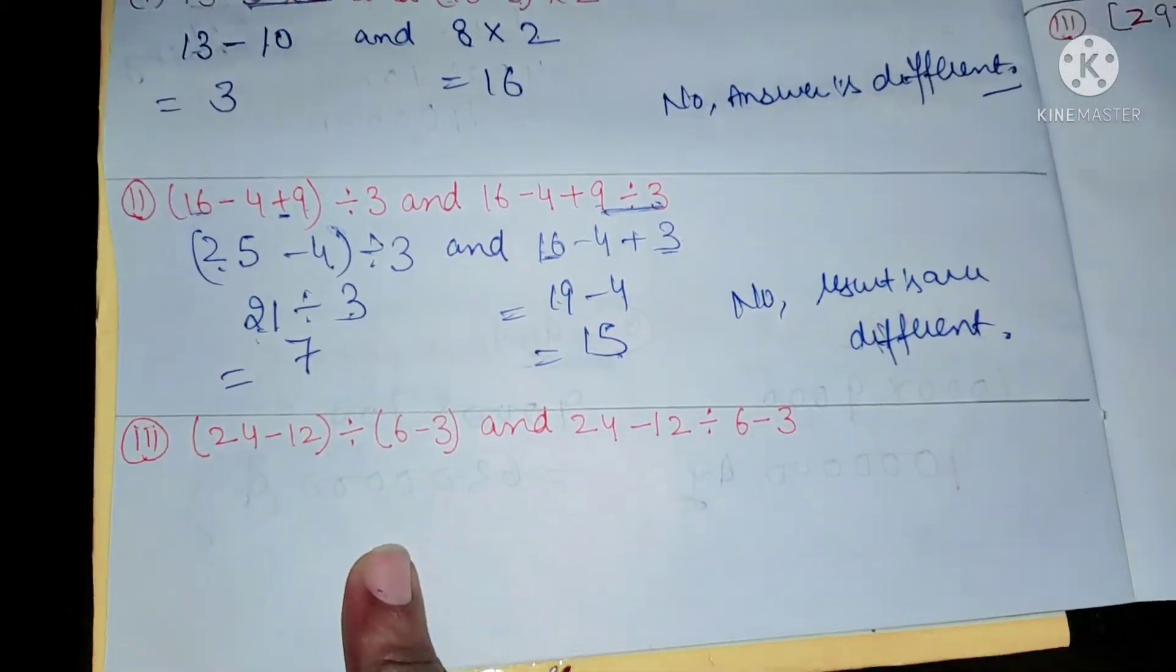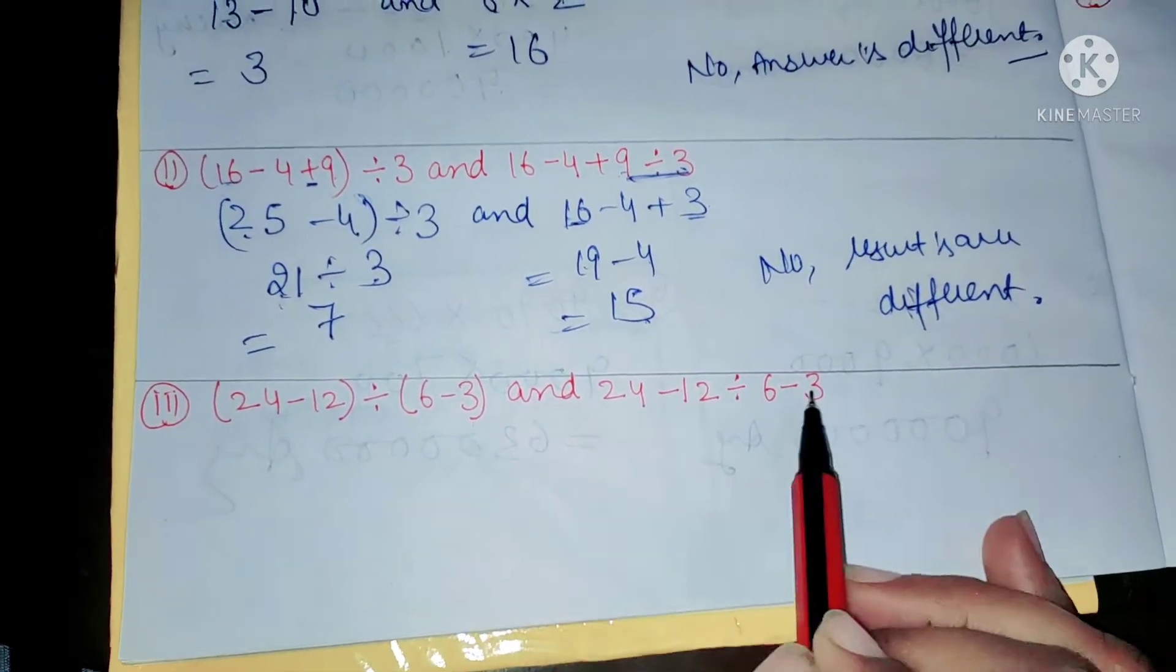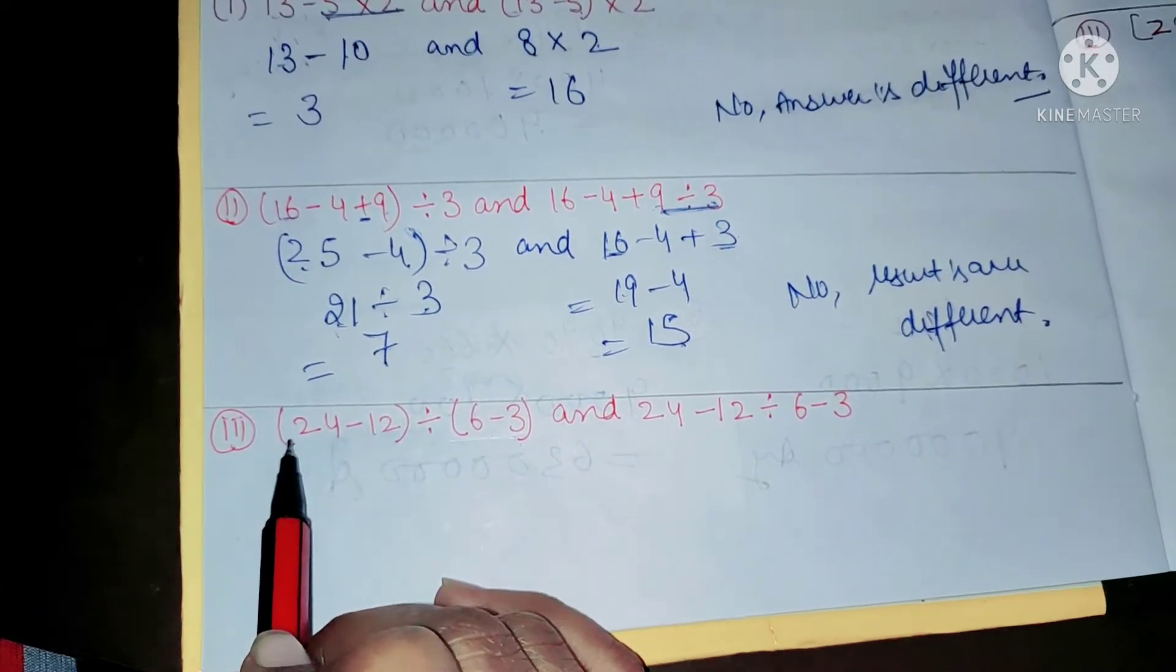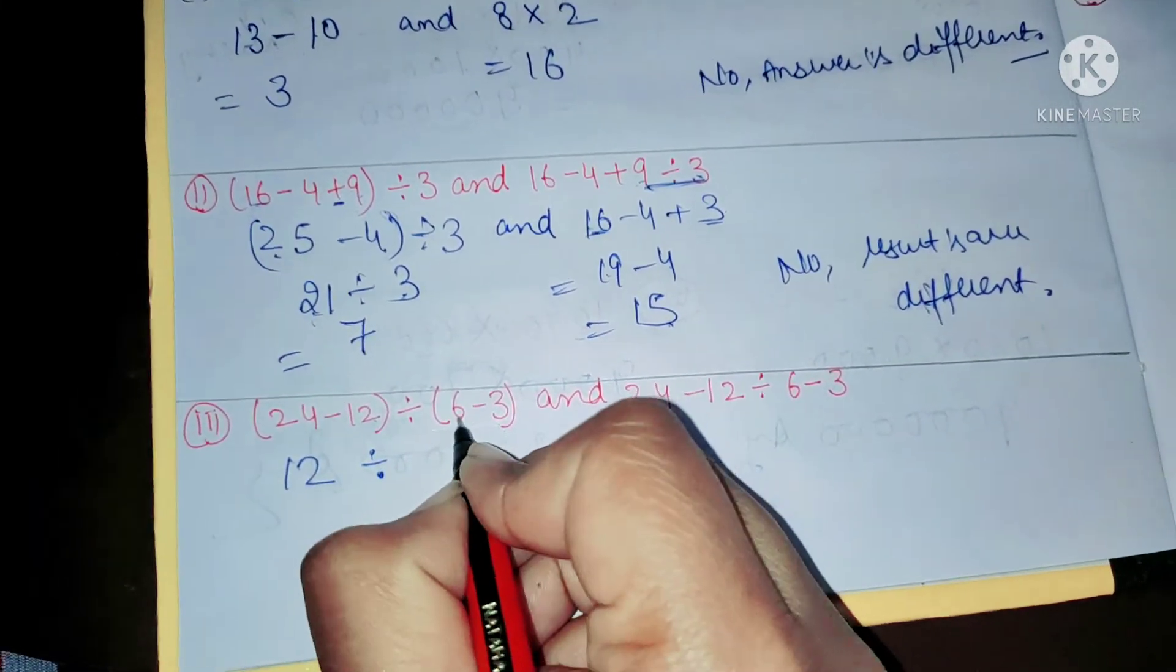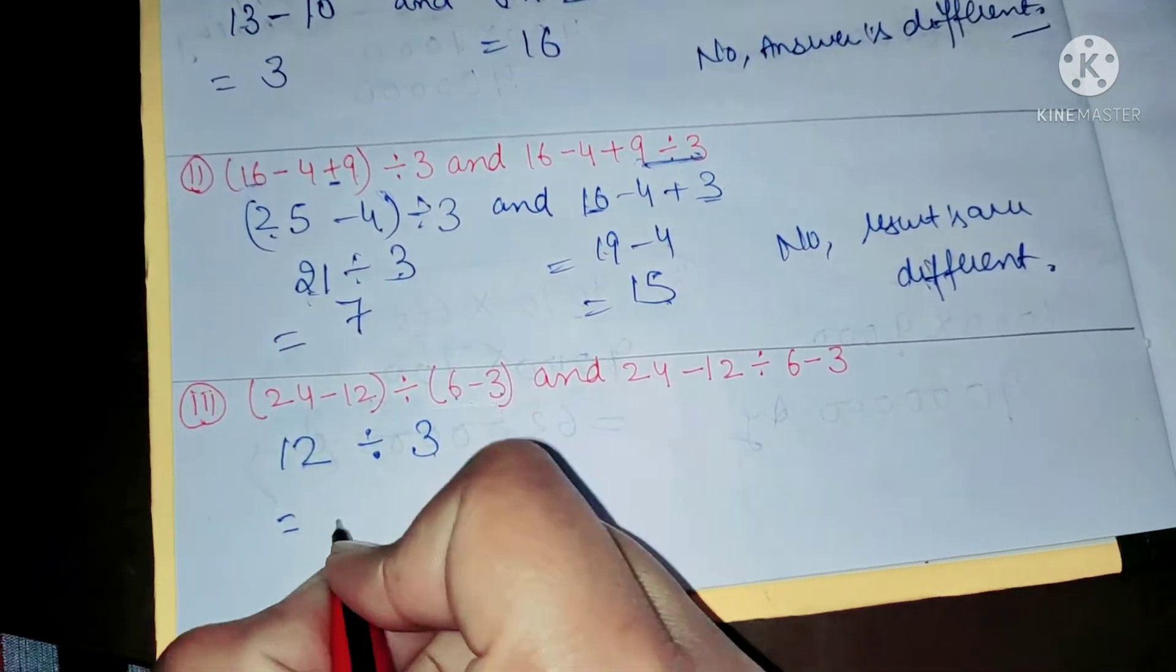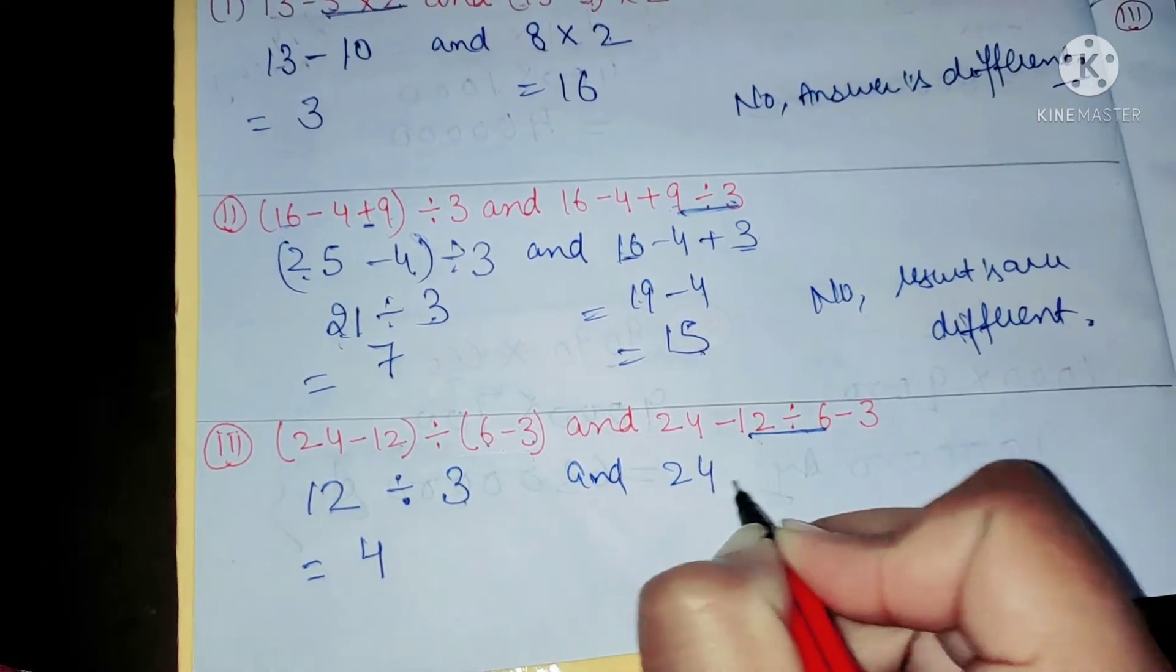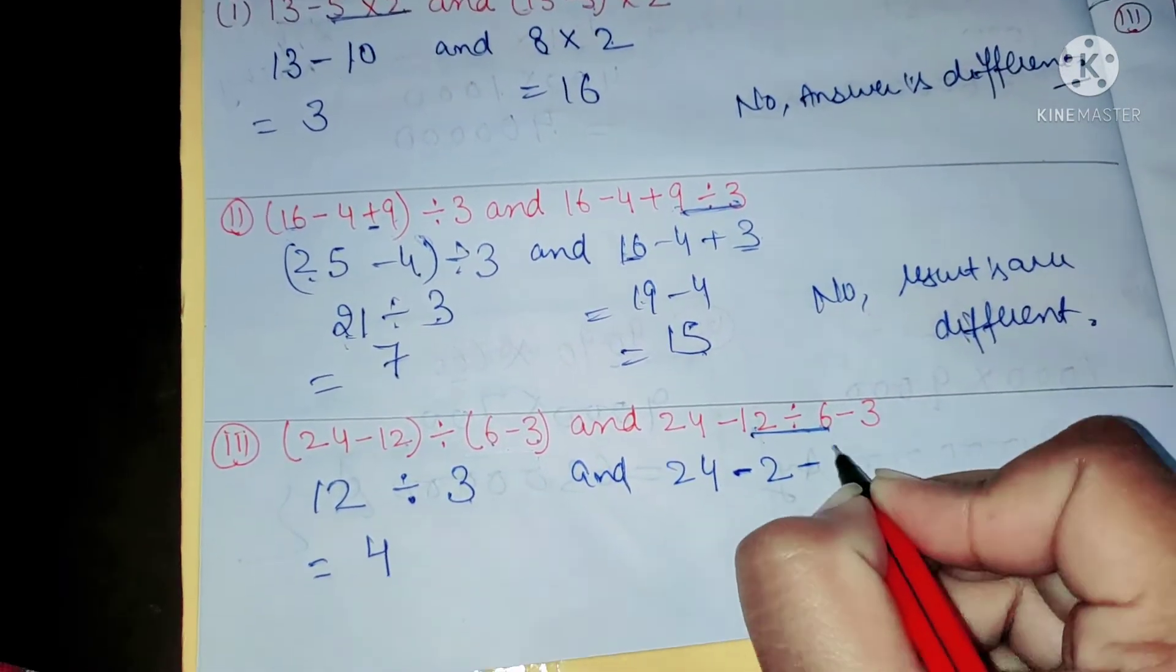Now the next question. Results are different because here it contains brackets and it is as it is without brackets. Now first we have to solve these two brackets: 12 divided by... Now it will be 6 divided by 3. Now divide both: it will be 12 divided by 3 equals 4. And we have to solve, first we have division: 24 minus 6... 12... 6 divided by 2 minus 3.